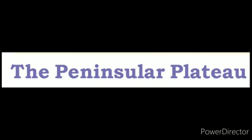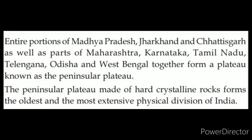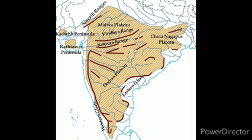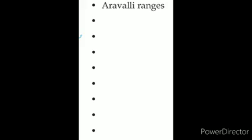The third geographical region of India is the Peninsular Plateau. Entire portions of Madhya Pradesh, Jharkhand, Chhattisgarh, as well as Maharashtra, Karnataka, Tamil Nadu, Telangana, Odisha, and West Bengal together form this plateau. This Peninsular Plateau, made of hard crystalline rocks, forms the oldest and most extensive physical division of India. Watch the map, find the area of the Peninsular Plateau, and based on that map, let's fill in the blanks given there.